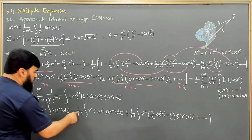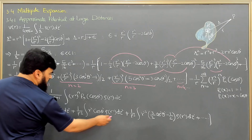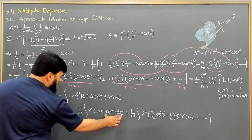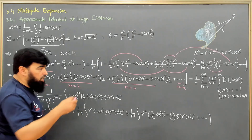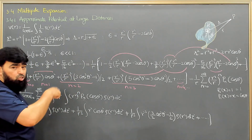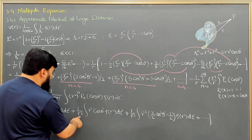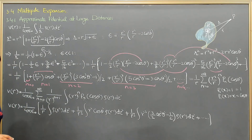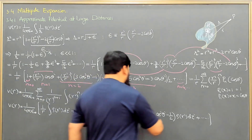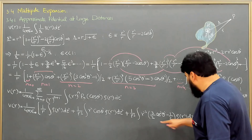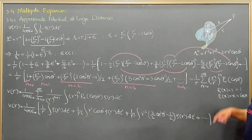The n equals 1 term is the dipole term: it gives (1/4π epsilon naught) times q·d over r squared. The next term is the quadrupole term, then the octopole term, and so on.